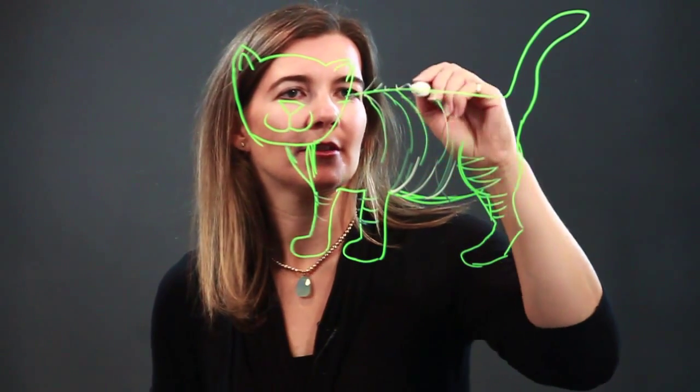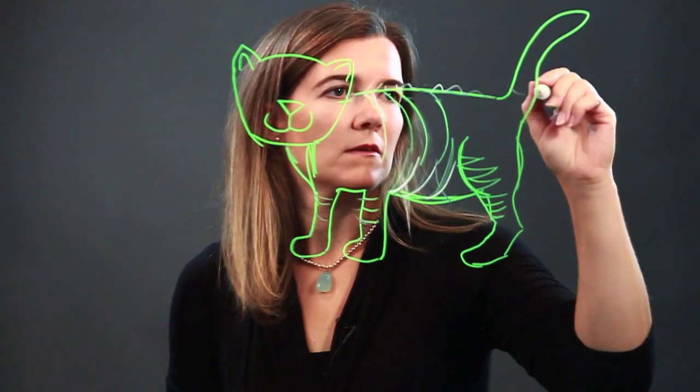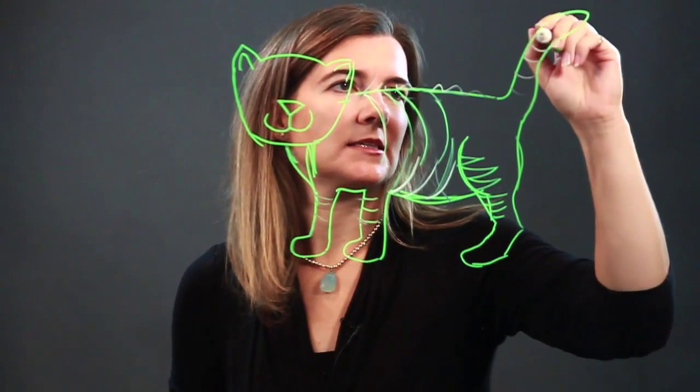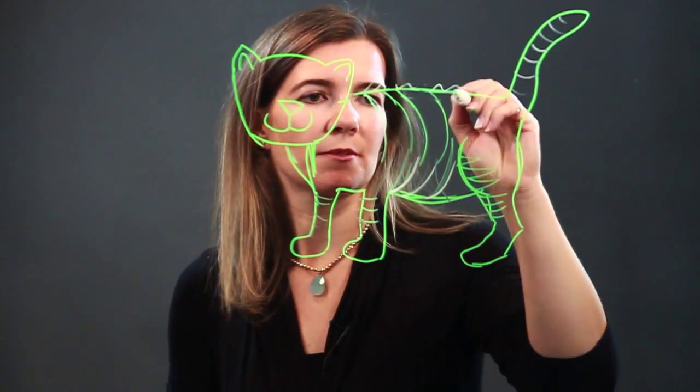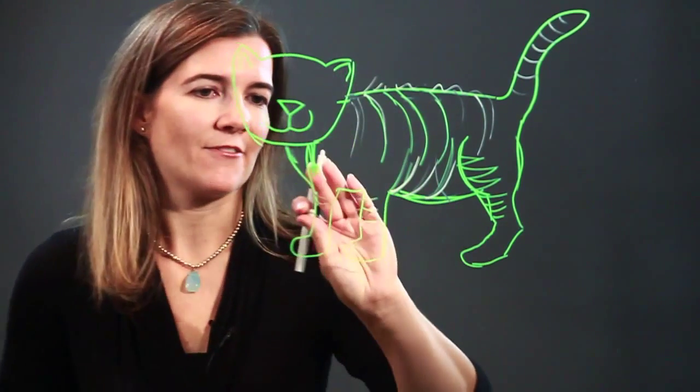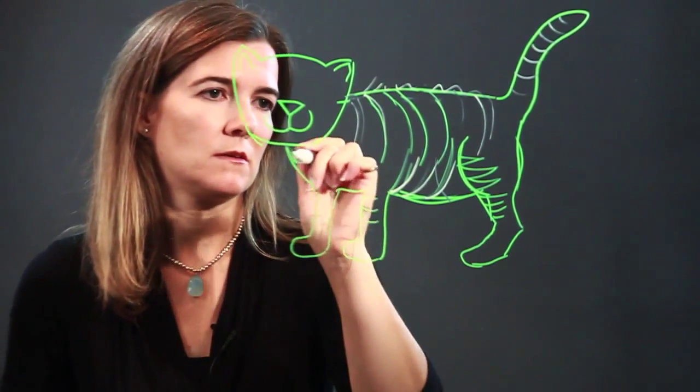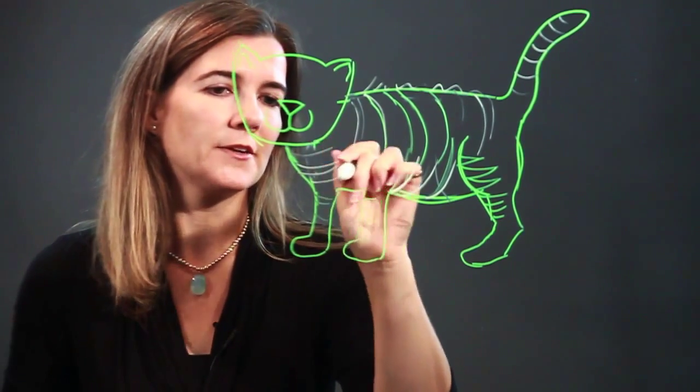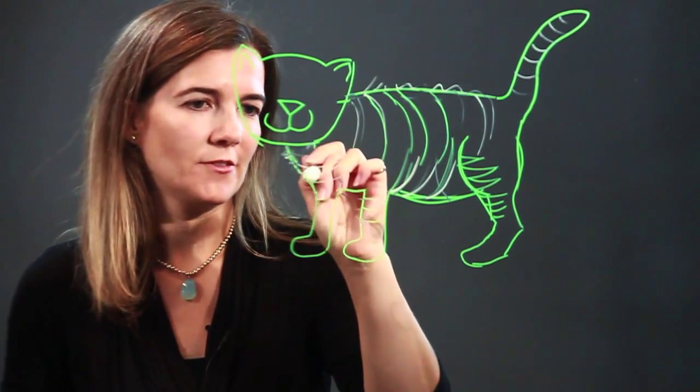You can add hair if you'd like. Again, it's these rounded lines that are really going to get you the 3D element and bring life to your animal. And you can add, as I said, fur if you'd like.